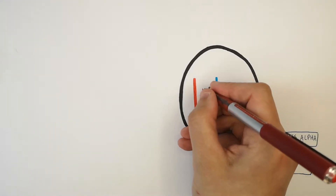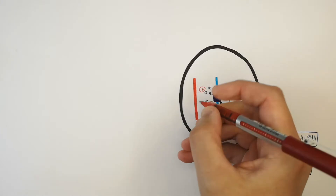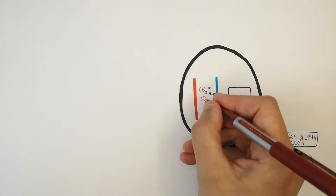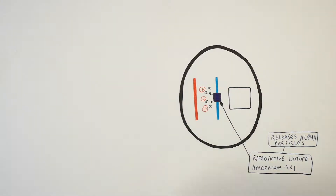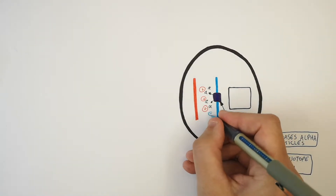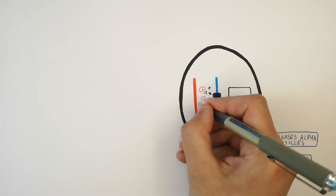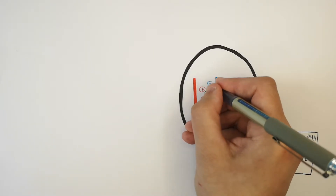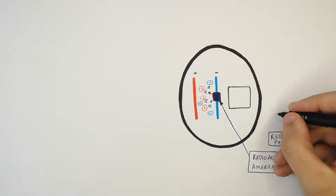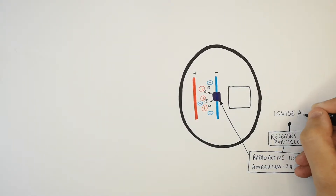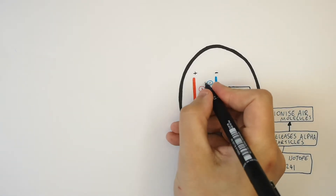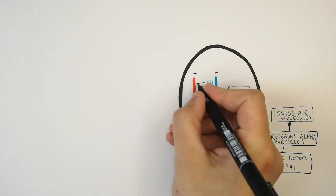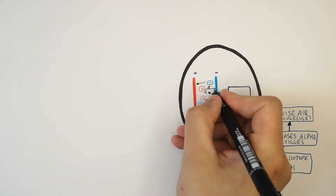What do the alpha particles do to the air molecules? They ionize them. The alpha particles ionize the air molecules, and this causes a current to form between the plates.